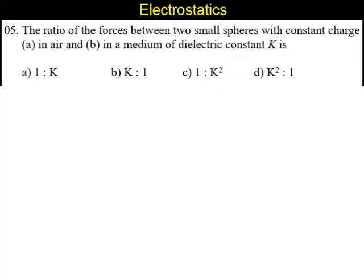Force between charges according to Coulomb's law is given by F is equal to 1 by 4 pi epsilon naught Q1 and Q2. Let that be the charge of the two small spheres divided by the distance, let us say R square. This is in the case of air.